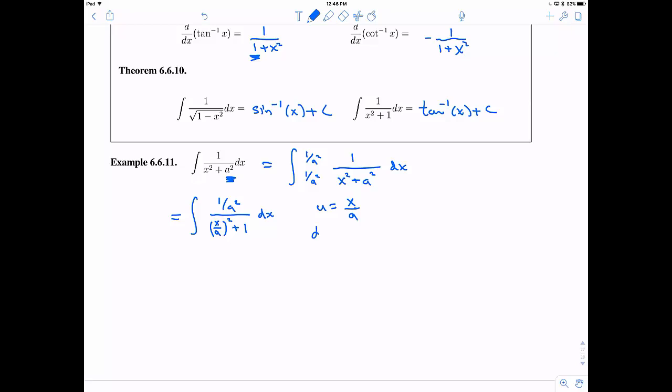So u is going to be x over a. So therefore, du is going to be 1 over a dx.